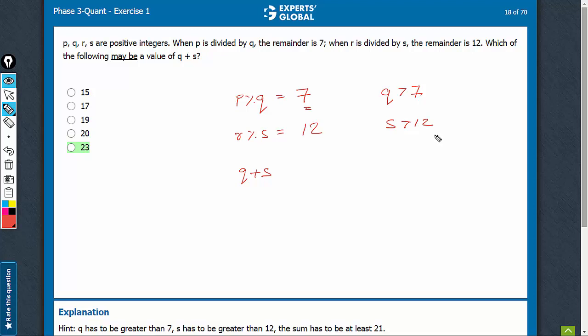Remainder is the leftover, something that is left after dividing, and therefore the remainder is always less than the divisor.